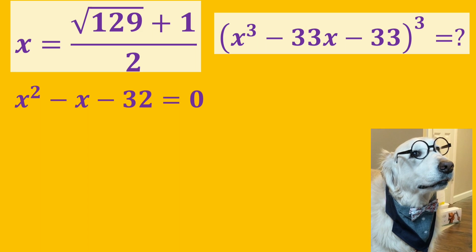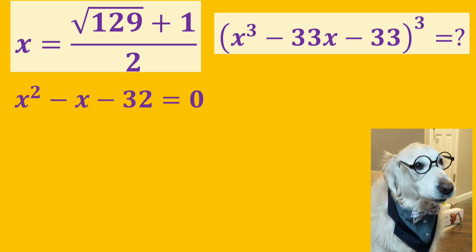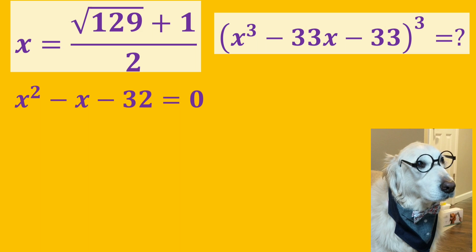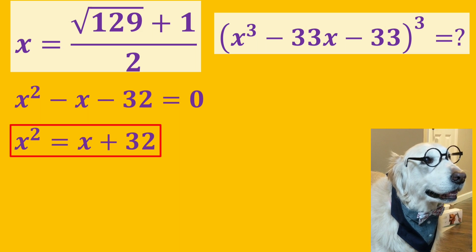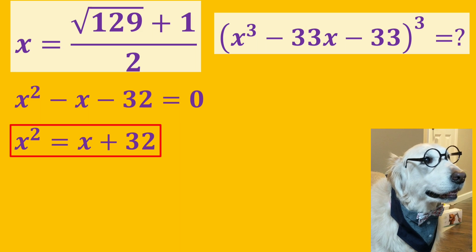Now, we have x squared minus x minus 32. We can take minus x and minus 32 to the other side of the equation.